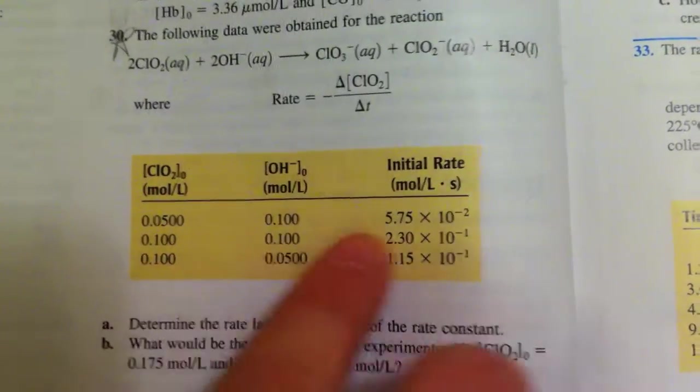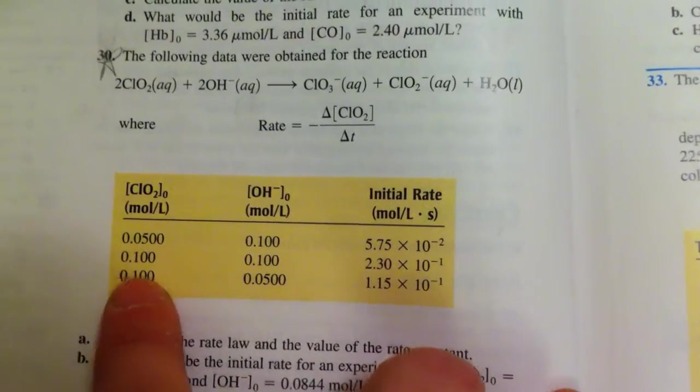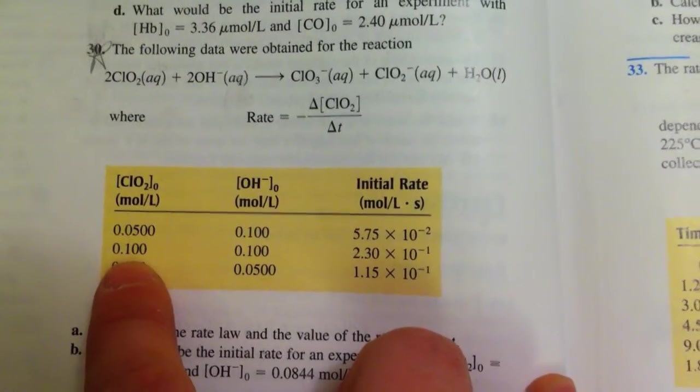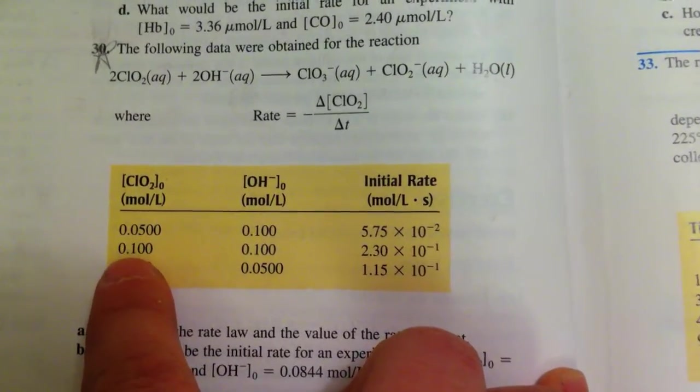So we see here that if I take the first two trials, the OH is constant, so it allows me to see what is the effect of changing the concentration of the ClO2.